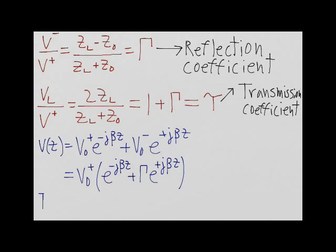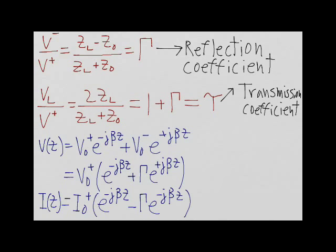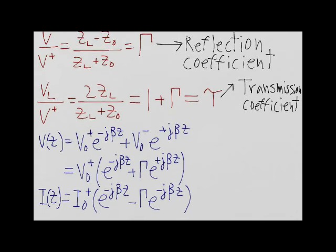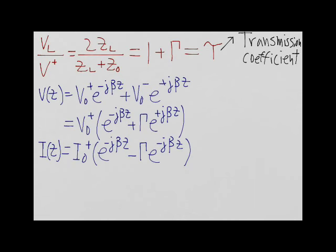In the same way, we can write the current I of Z equal to I0+ multiplied by e to the minus j beta Z minus gamma e to the plus j beta Z. Where I0+ is equal to V0+ divided by Z0.